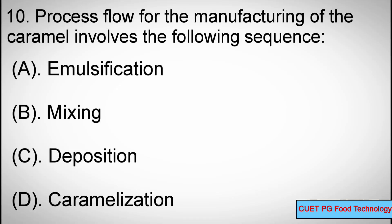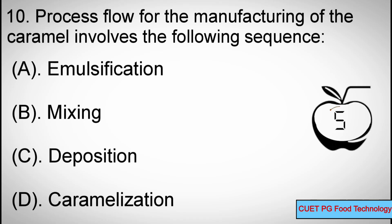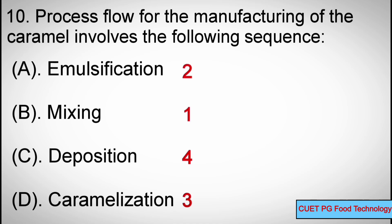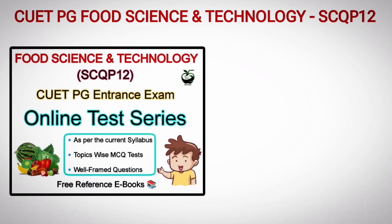Question number ten: The process flow for the manufacturing of caramel involves the following sequence — options: A) Emulsification, B) Mixing, C) Deposition/Caramelization. The correct sequence is: Mixing, then Emulsification, then Caramelization, and finally Decomposition.